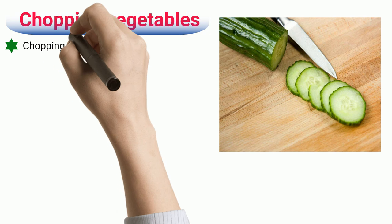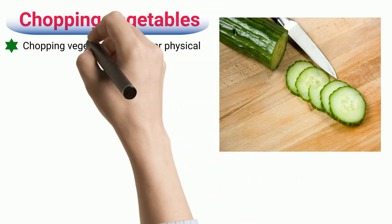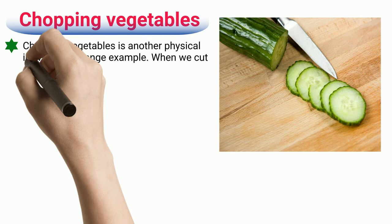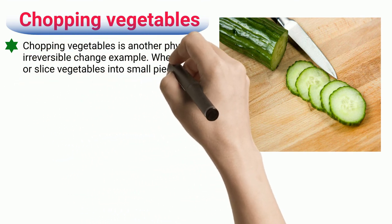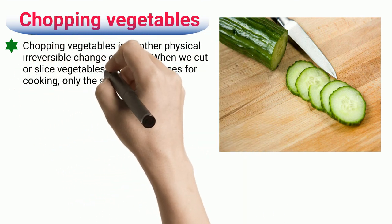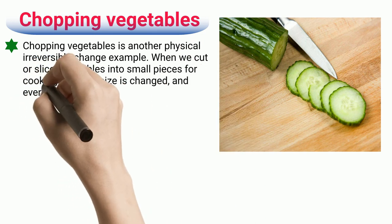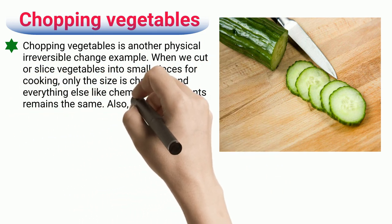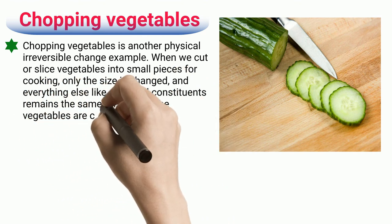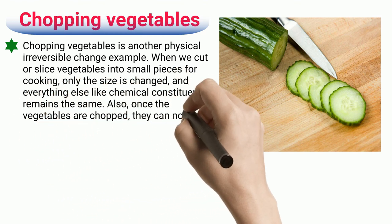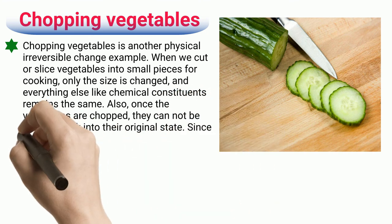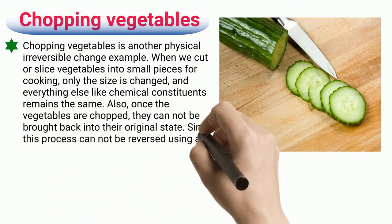Chopping Vegetables. Chopping vegetables is another physical irreversible change example. When we cut or slice vegetables into small pieces for cooking, only the size is changed and everything else, like chemical constituents, remains the same. Also, once the vegetables are chopped, they cannot be brought back into their original state. Since this process cannot be reversed using any method, it is an irreversible change.